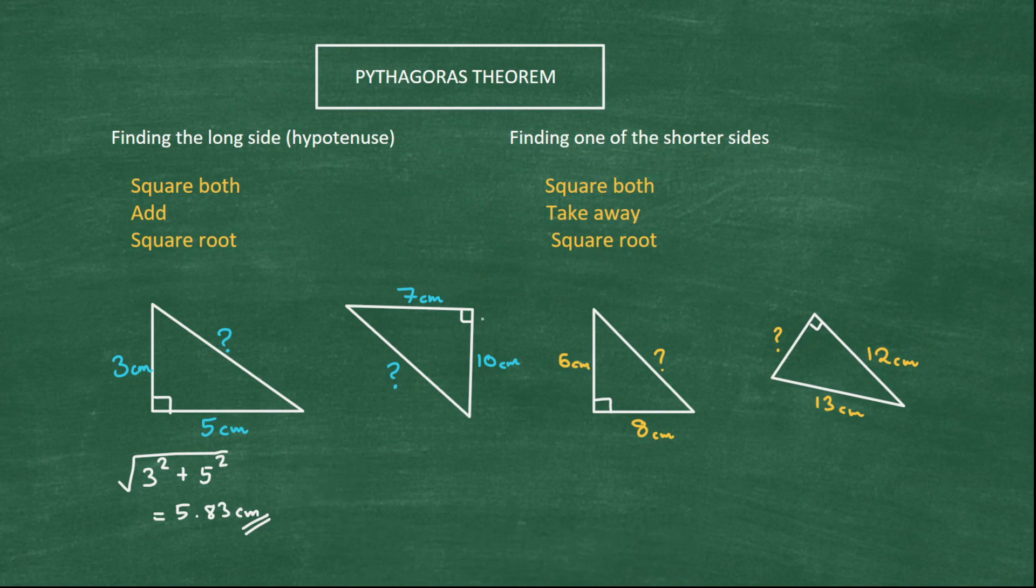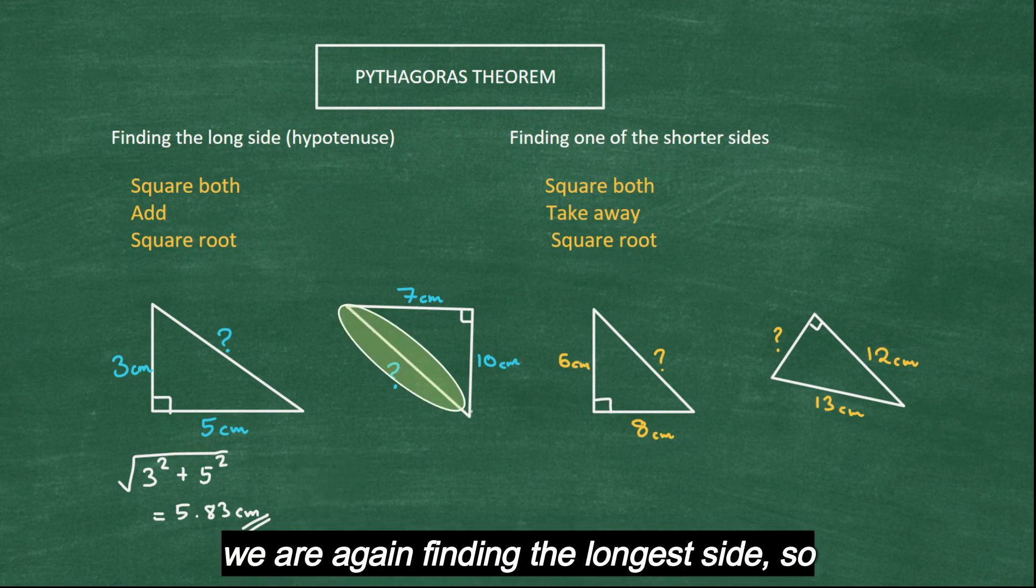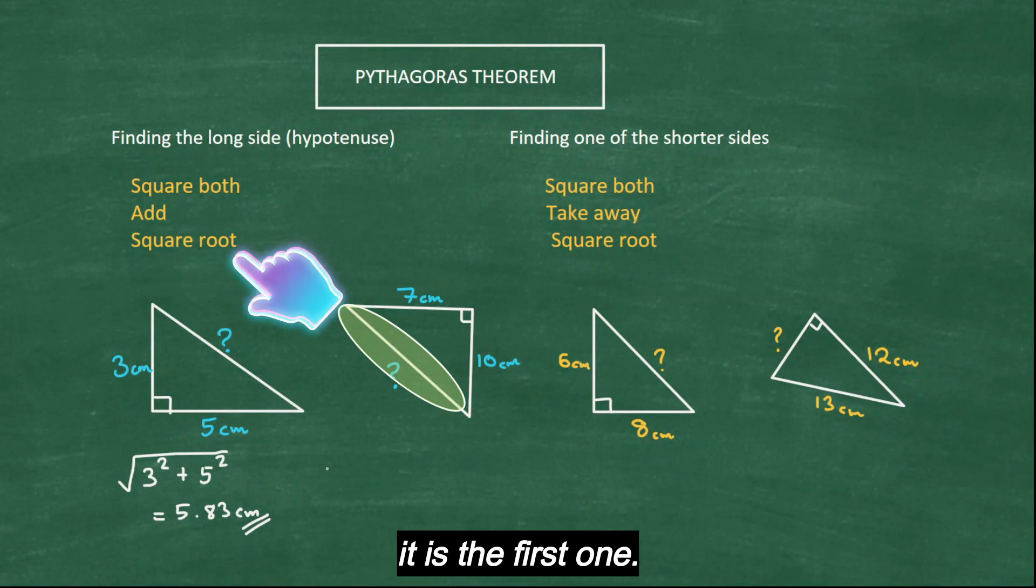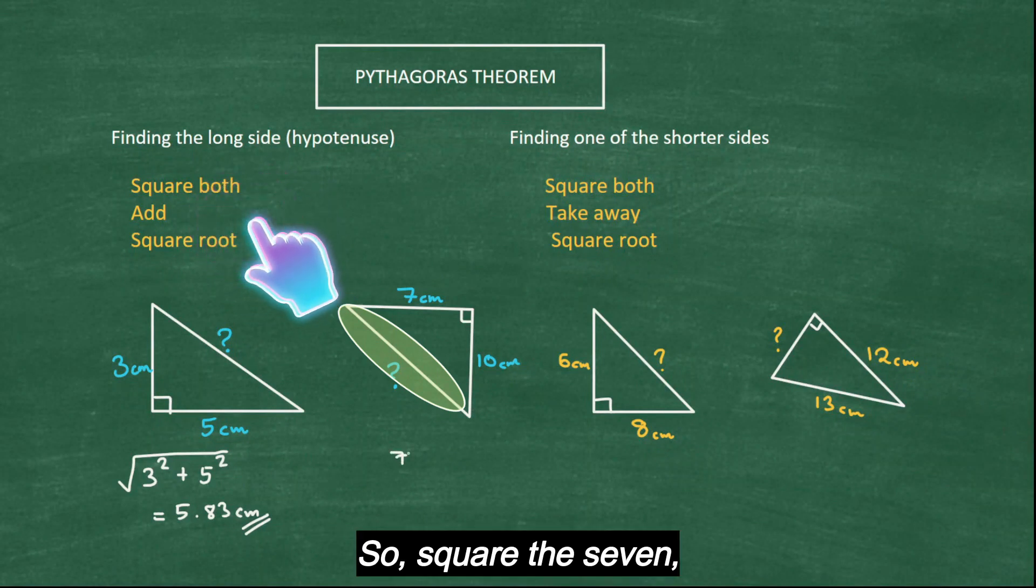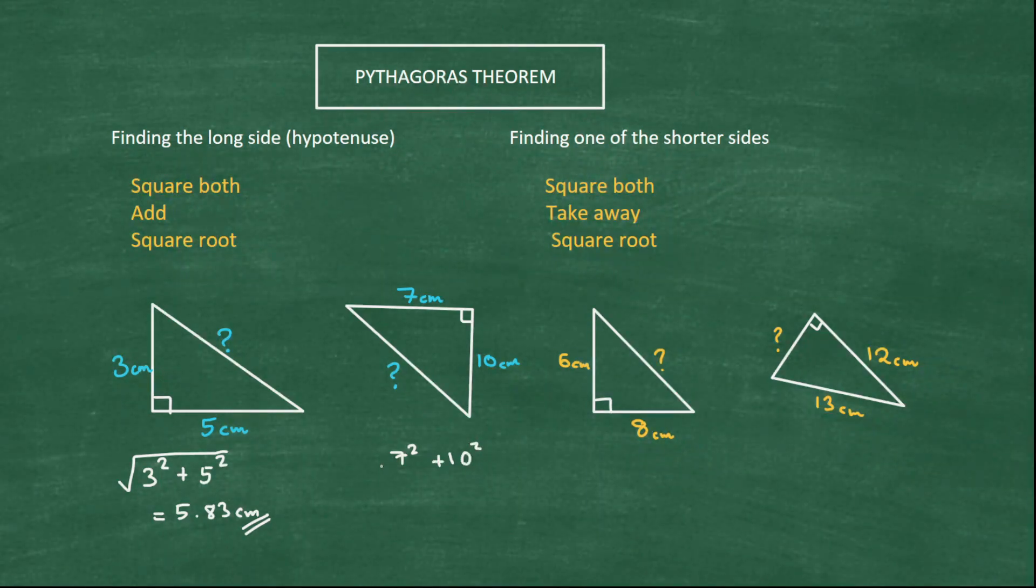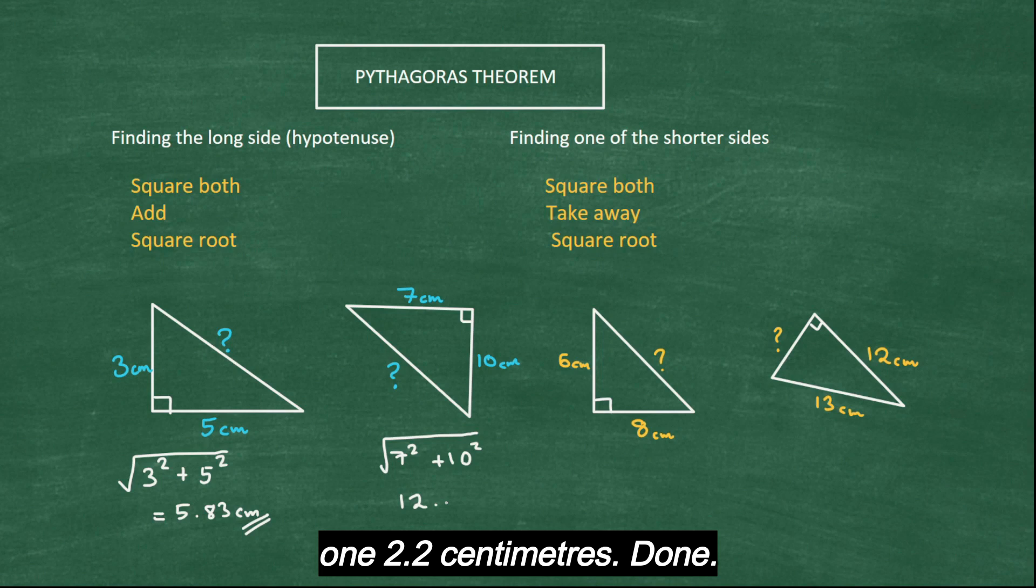Look at the second one. We are again finding the longer side. So it's the first one. So square the 7, square the 10, add them up and root it. 12.2 centimeters. Done.